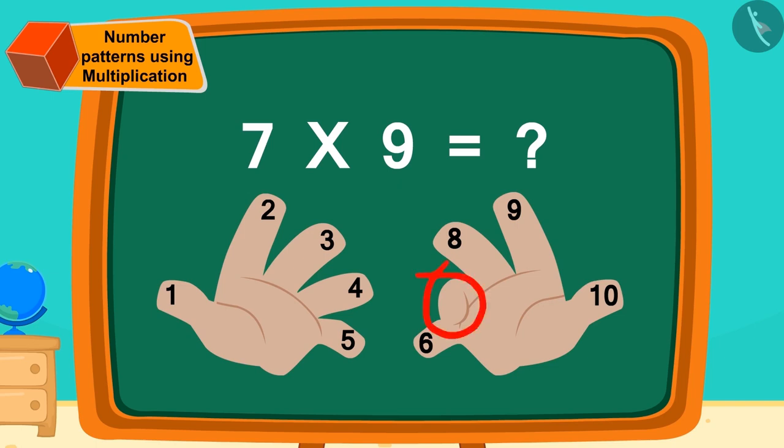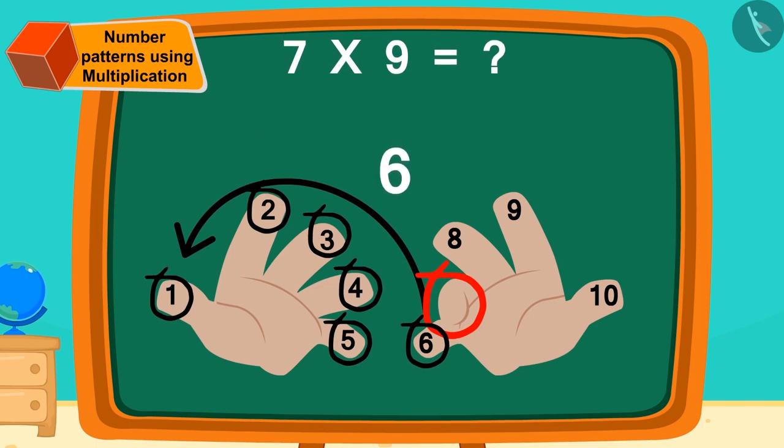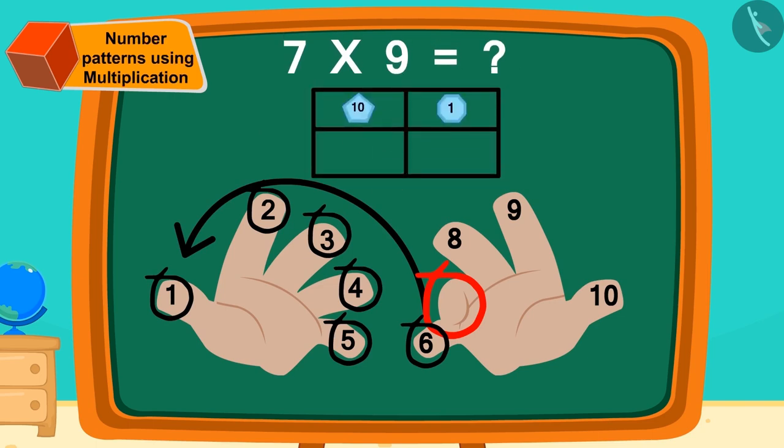Now, how many fingers are there on the left side of the bent finger? Six. In this way, we will write it in a tens digit place.